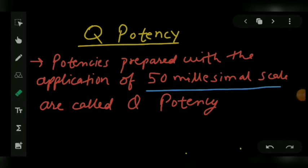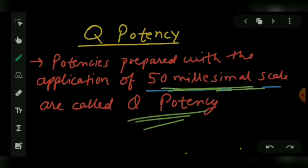Okay, so today let us discuss Q potency. What is Q potency? These are potencies which are prepared with the application of 50 milliesimal scale. Potencies prepared from the application of 50 milliesimal scale are called Q potency. Here's the definition about Q potency and let's see some of its important points.